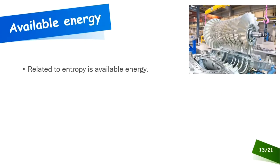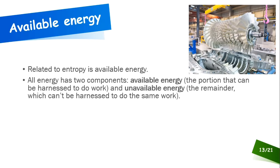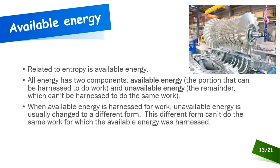All energy has two components: an available portion and an unavailable portion. Available energy is the portion that can be harnessed to do the work we need done. Unavailable energy is what's left over — you can't harness it to do the same work. The unavailable portion usually arises from some energy transformation, and this different form can't do the same work for which the available energy was harnessed.